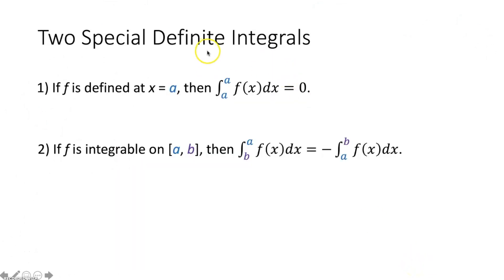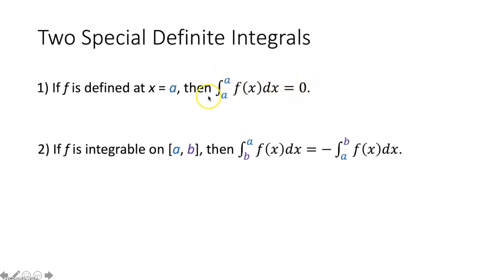Let's talk about two special definite integrals. The first one says if f is defined at x equals a, then the integral from a to a of f of x dx equals zero. Anytime your lower limit of integration and your upper limit of integration are the same exact number, that integral equals zero. It makes sense because you're calculating the area under this function from some x value to the same exact x value — there's no area under the curve, so it has to equal zero.